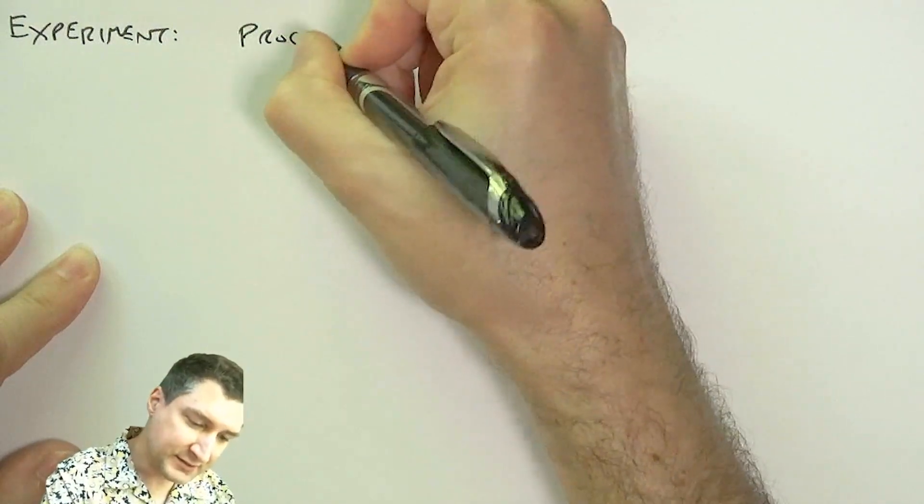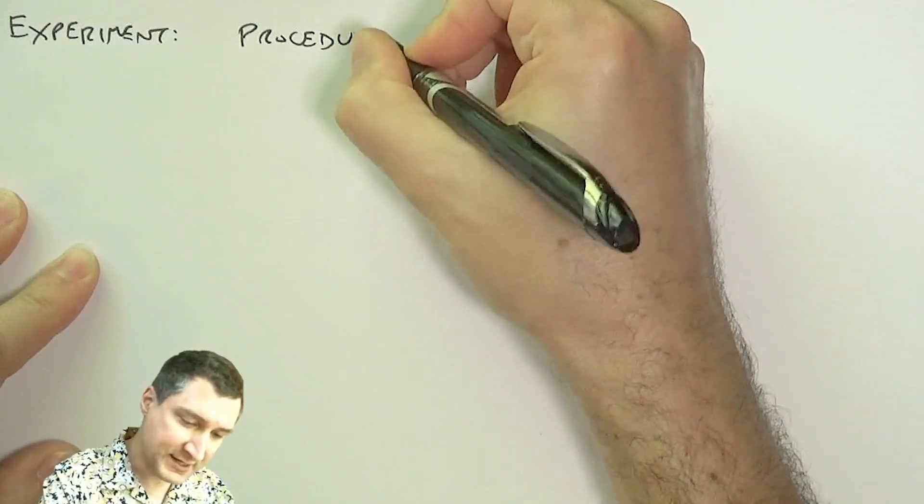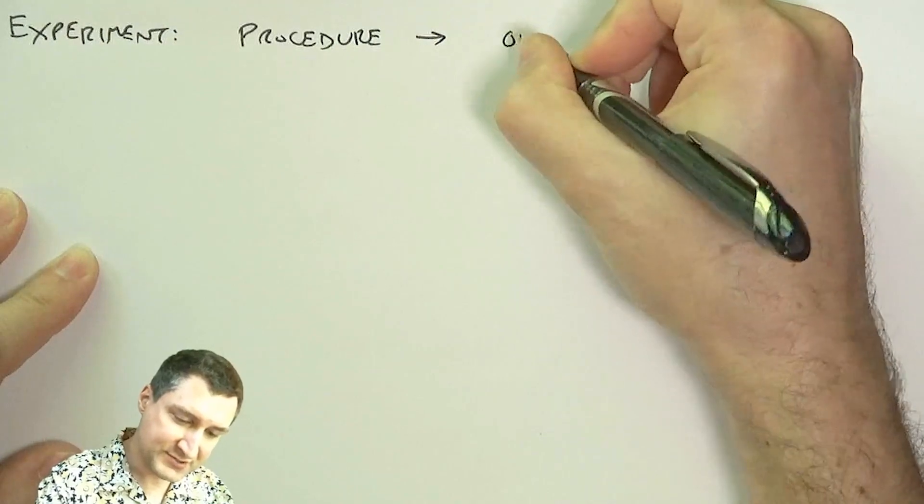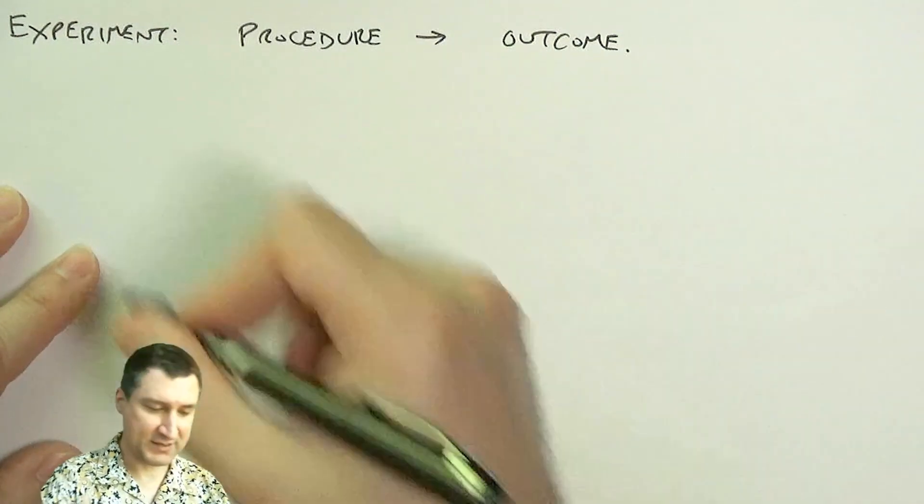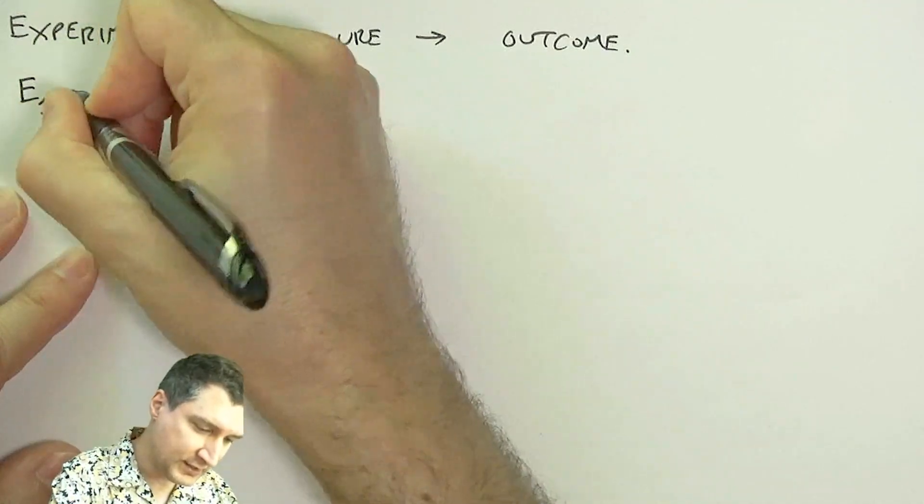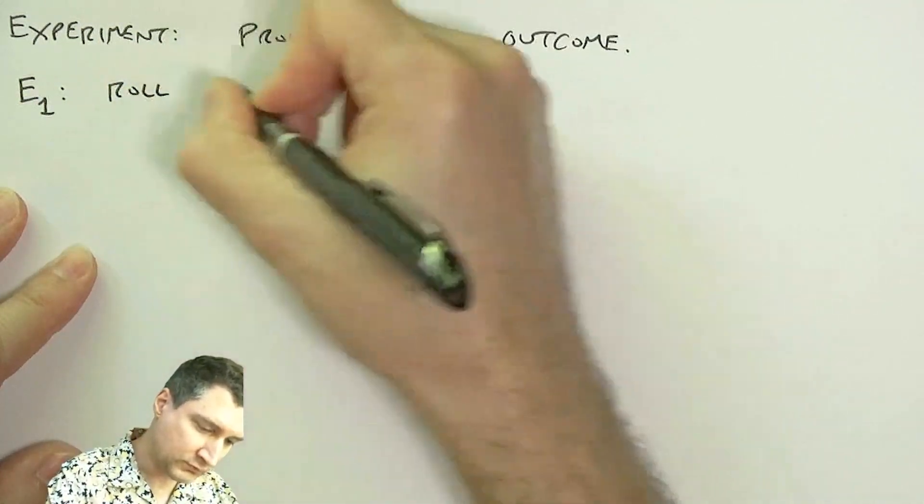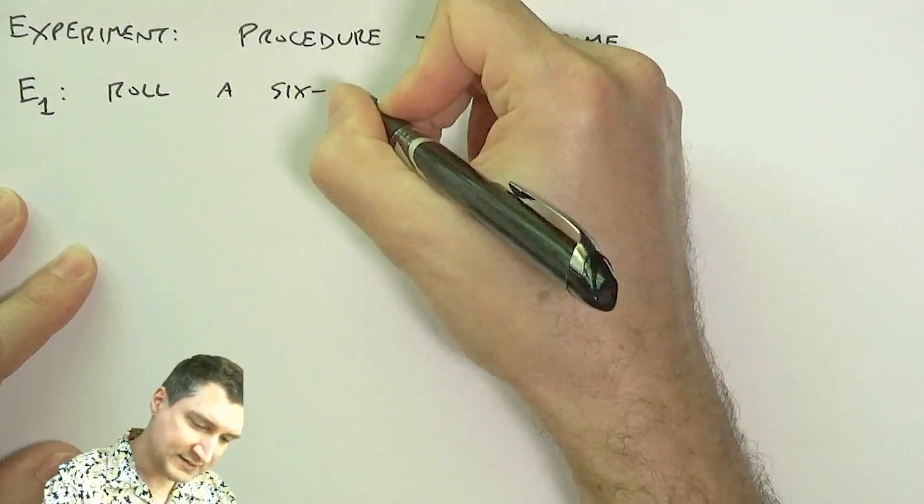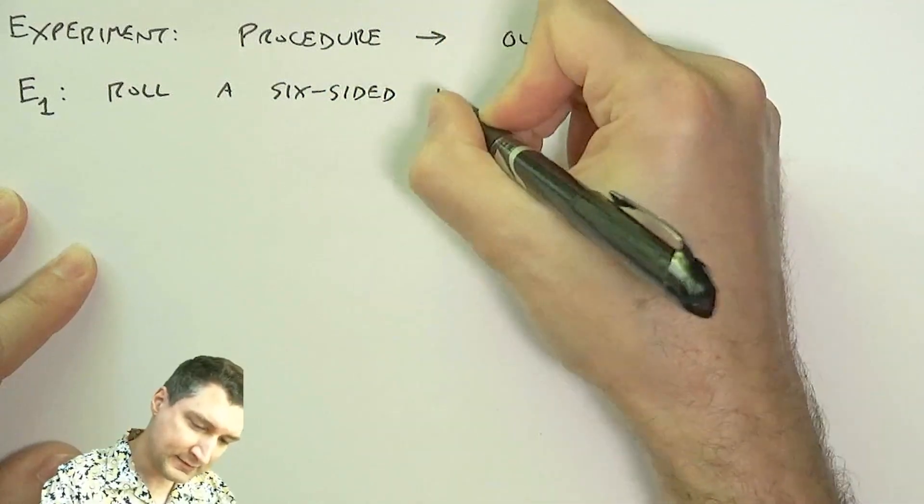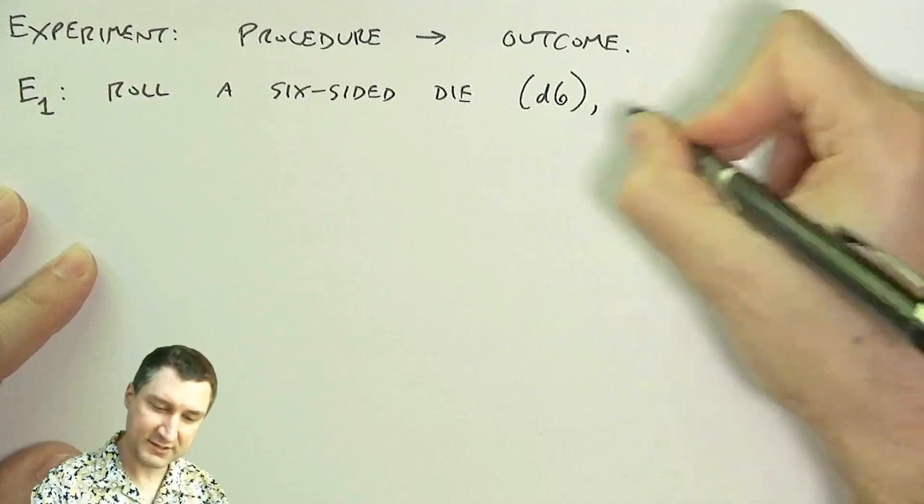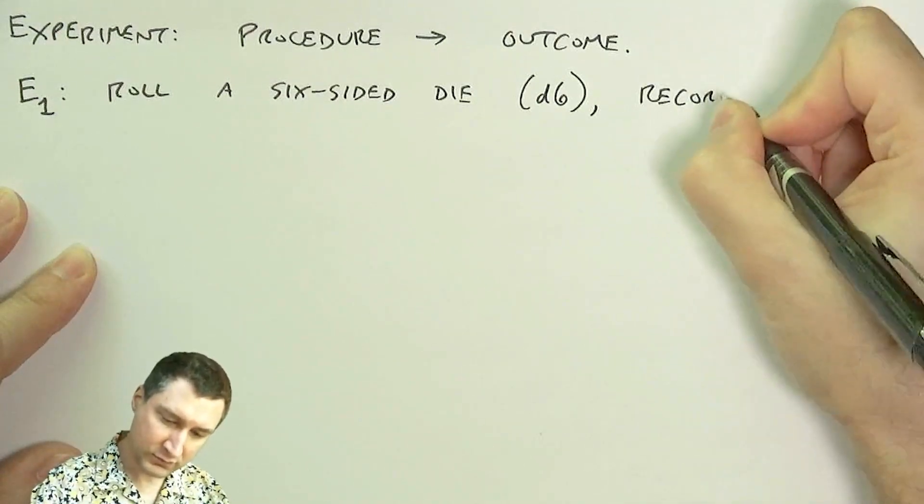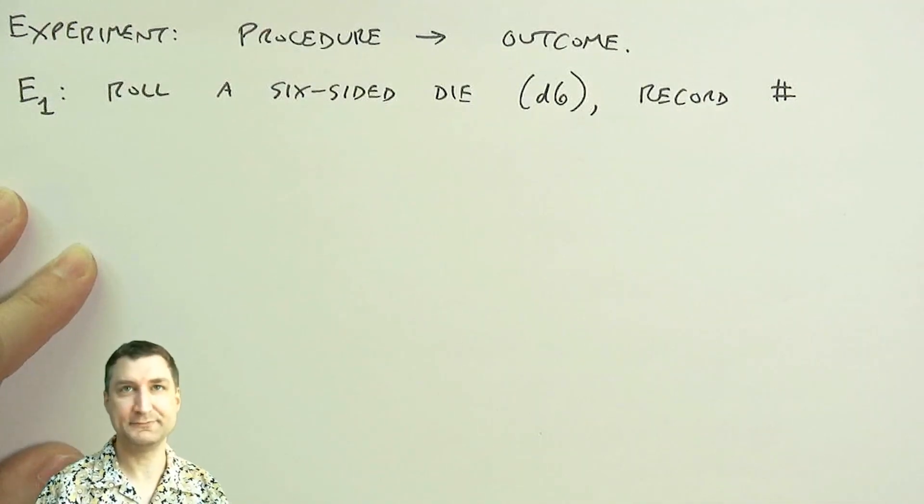So an experiment is basically some procedure that I undertake that produces an outcome. For example, I could roll a six-sided die, or for you D&D people, call that a d6, and I could record the number that I see. Okay, you're going to see lots of die rolling here in probability.